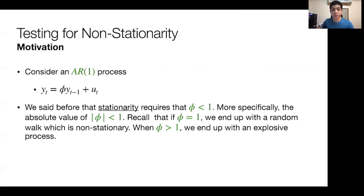If phi is less than 1, then the series is likely stationary. More specifically, if the absolute value of phi is less than 1, then clearly it would be stationary at that level.